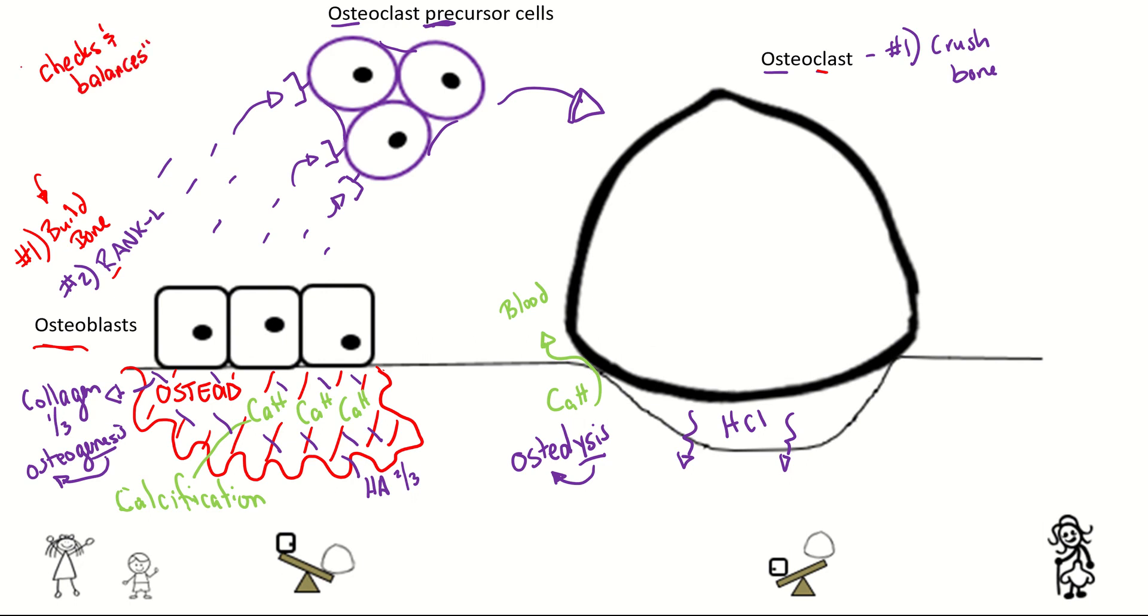Your body wants to maintain homeostasis. So when you're building bone, we have an innate process to make sure we build osteoclasts to crush the bone. So that way we kind of maintain the proper amount of building bone just right.